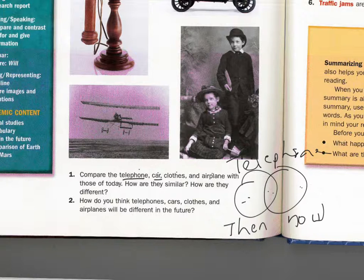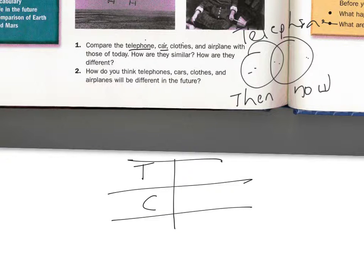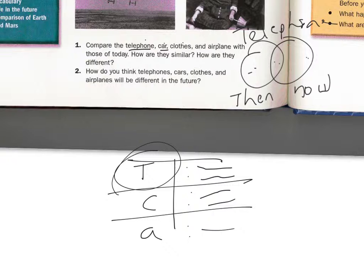For question two — how do you think telephones, cars, clothes, and airplanes will be different in the future? — a Venn diagram probably won't work best. It would be better represented as a T-chart. So let's say we have telephones, cars, children's clothes, and airplanes — what do you think they will be like in the future? Write your ideas, and show this on the blank page of your packet. I'd ask you to put it in your journal, but I'd like to actually see it.